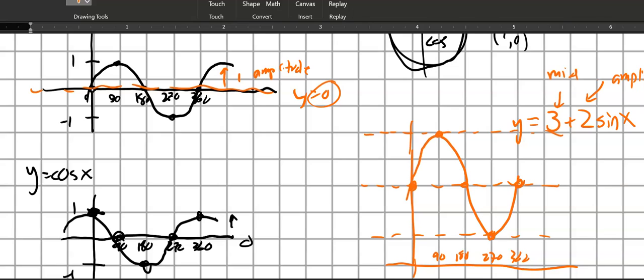So there's a sketch of that. Notice the pieces, 3 is the midline, 2 is the amplitude, the distance from the midline to one of the extremes.